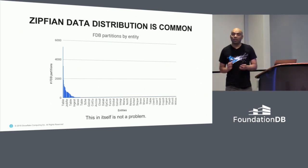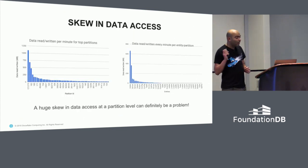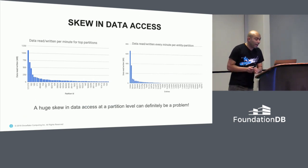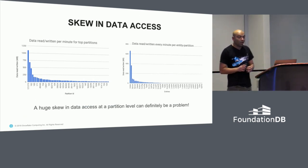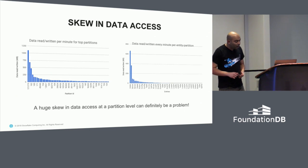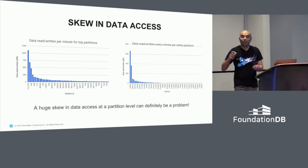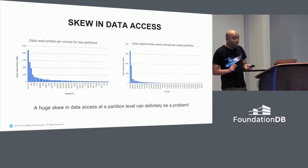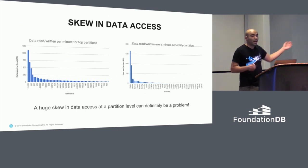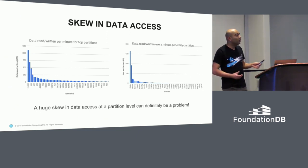It's very common to see Zipfian distributions for your data, where there's a large amount of certain kinds of data and very little of others. This in itself is not a problem; however, skews in data access is a problem. What we've done is figure out how much data is read or written per minute for the top partitions. The graph on the left is the view from the FDB side, the graph on the right is the view from the application side by entity, but they've been merged and viewed together.